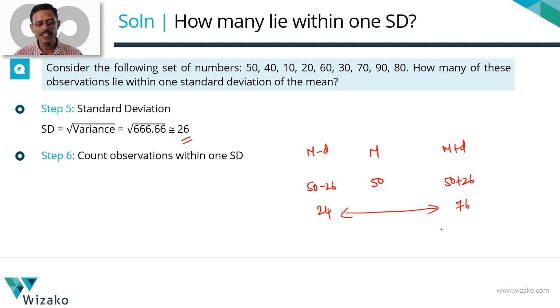50 is between 24 and 76. 40 is also. 10 is not. 20 is not. 60 is. 30 is. 70 is. 90 and 80 are not. So how many observations lie within one standard deviation? Five of these observations lie within one standard deviation.